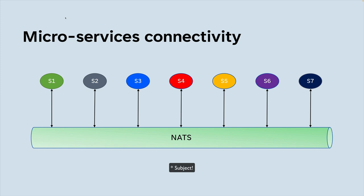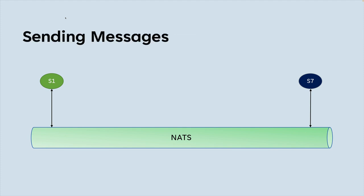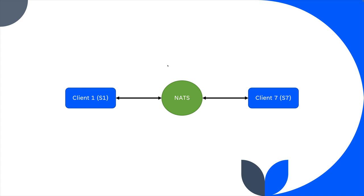What they do is use a subject to communicate. In my previous illustration it would seem as though for service 1 to send a message to service 7, the message would have to contain who it's being sent to and where it came from. But NATS takes care of the from and to. Every service that connects to NATS is just a client — client 1 and client 7 are just all clients.